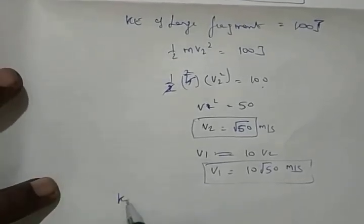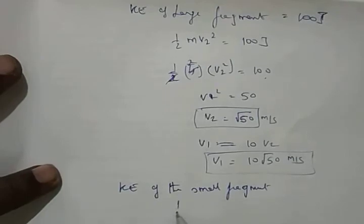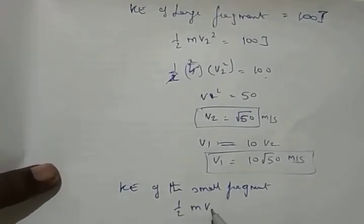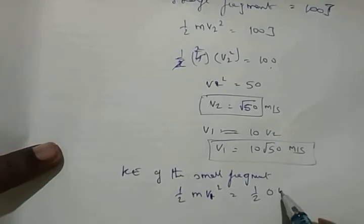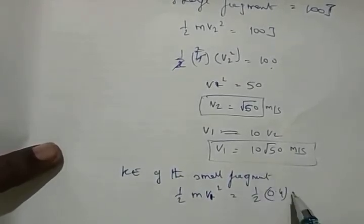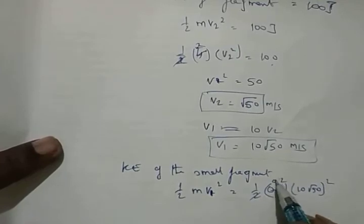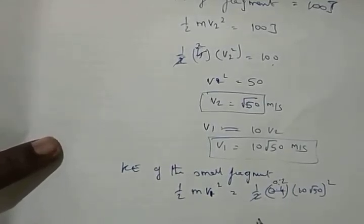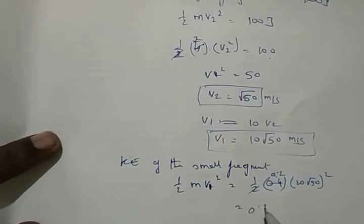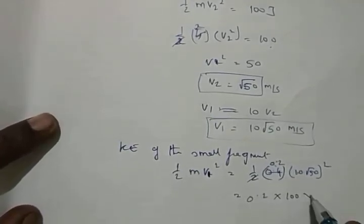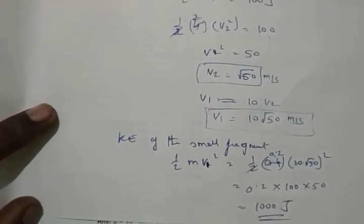Now find the kinetic energy of the smaller fragment: ½·M·V1² = ½ × 0.4 × (10√50)² = 0.2 × 100 × 50 = 1000 joules. That is the final answer.